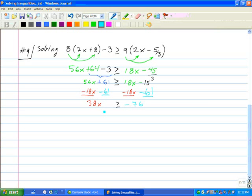Last step will be to divide by 38 both sides. We are dividing by positive 38. Therefore the symbol does not change. And our answer is x. 76 divided by 38. 38 fits into 76 two times. So that's a negative 2.